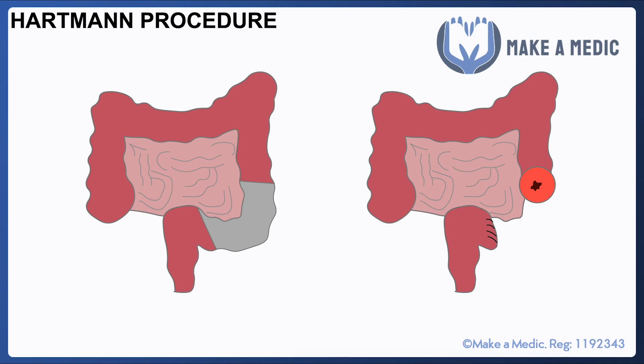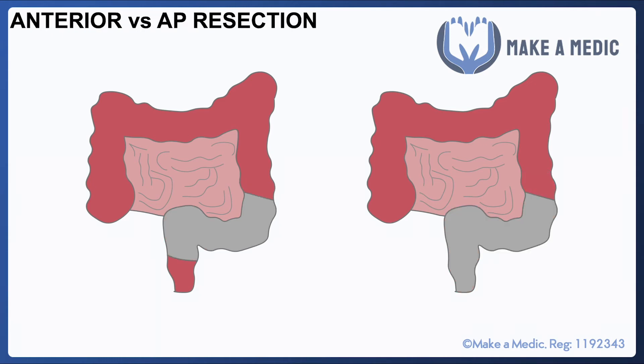Perhaps at a later date the Hartmann's can be reversed, but a relatively large proportion of patients will continue to have an end colostomy and not undergo the reversal procedure. The key point to remember is that Hartmann's procedure is usually done under emergency circumstances where the conditions for healing of a primary anastomosis are suboptimal, in which case you settle for an end colostomy and a rectal stump.